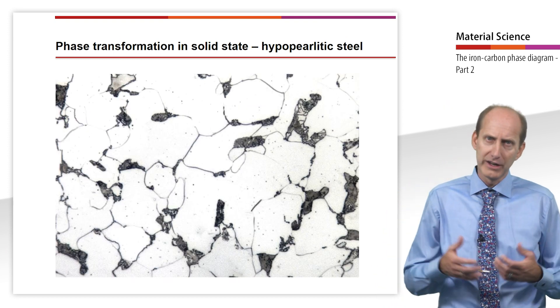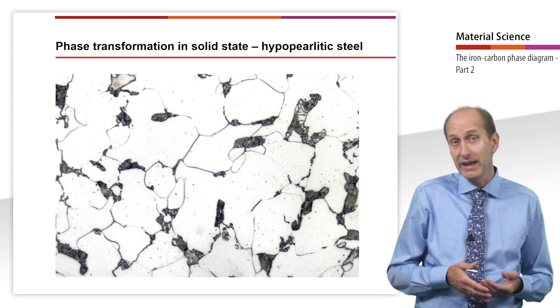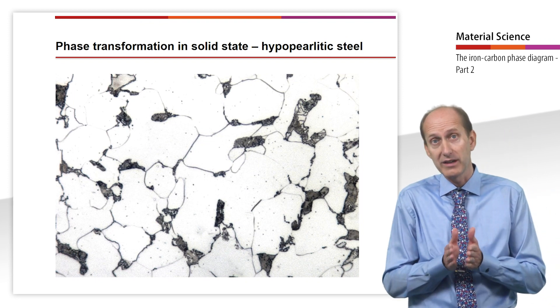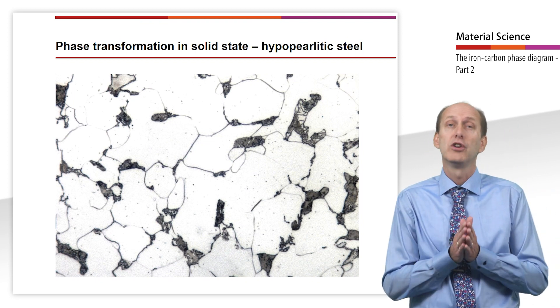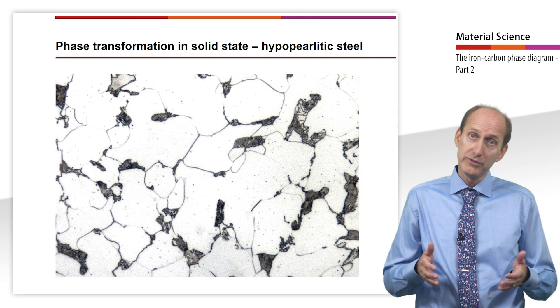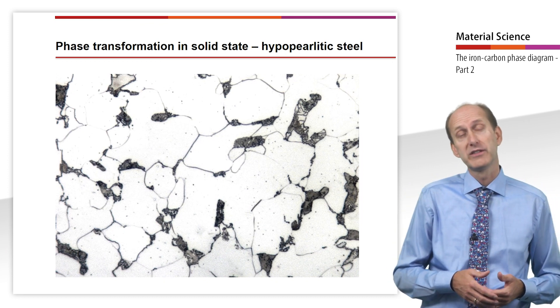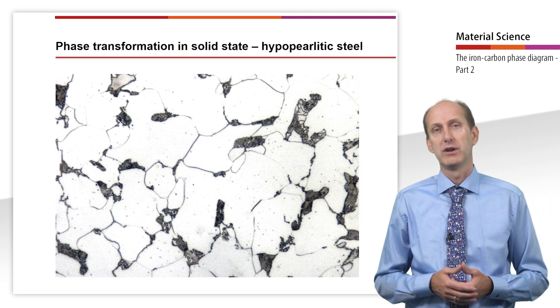The microstructure of ferrite with fine layers of cementite is called pearlite. At room temperature, ferrite exists alongside pearlite.